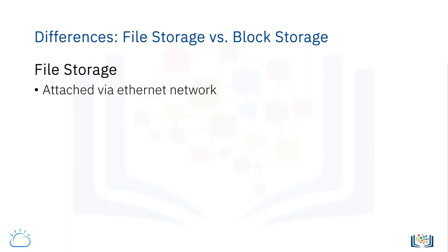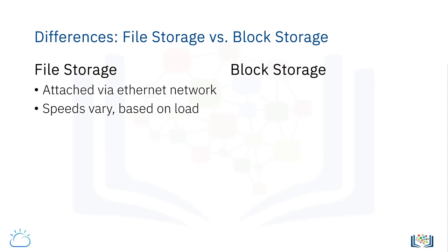File storage is attached to a compute node using an Ethernet network, so it is sometimes called network attached or NFS storage. File storage is very reliable, but the speed of the connecting network can vary based on load. Block storage is attached via a high speed fiber network, which is very reliable and consistent.